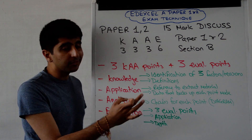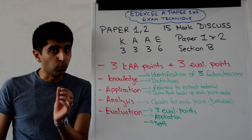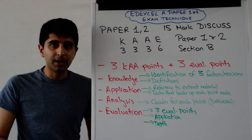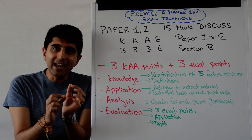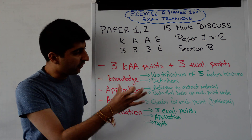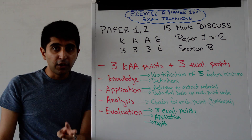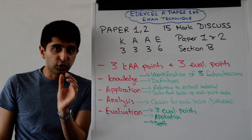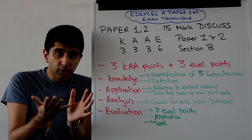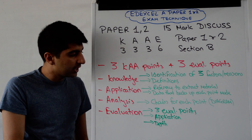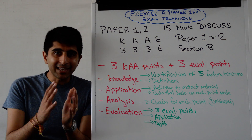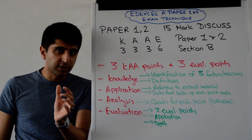Now the evaluation. Six marks for evaluation, weighted quite heavily here. For each KAA point that you're trying to make, for each paragraph, you want to end it with a solid evaluation point. For each paragraph there are two marks available for evaluation, so you've got to make sure that you identify an evaluation point — three points in total across the essay. So you state your point and make it clear what your evaluation is.